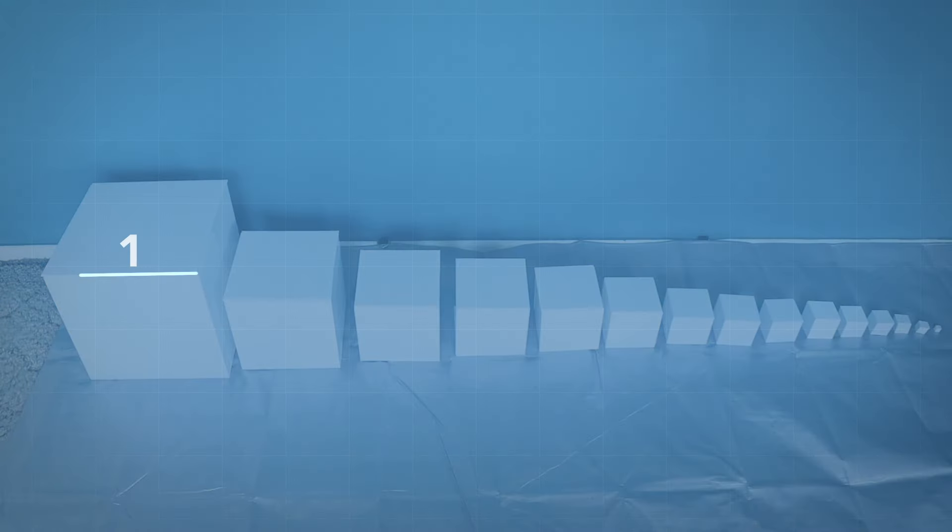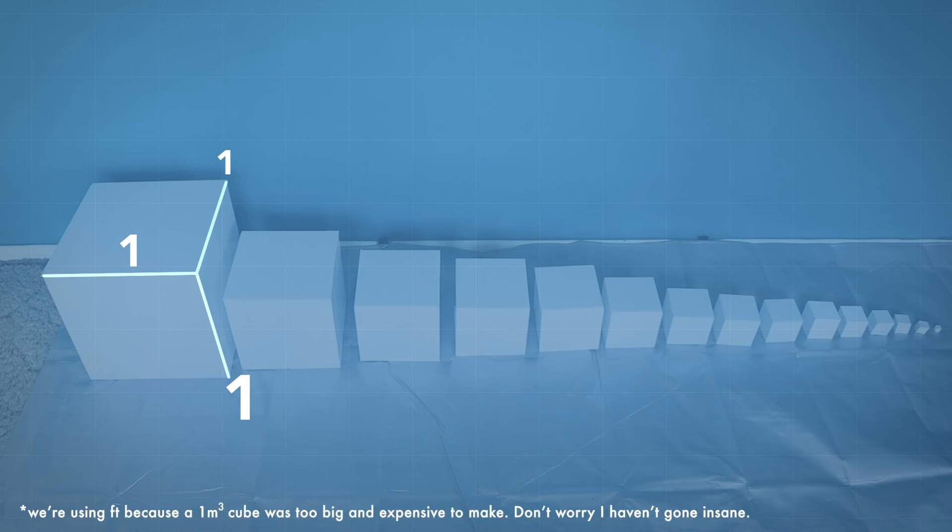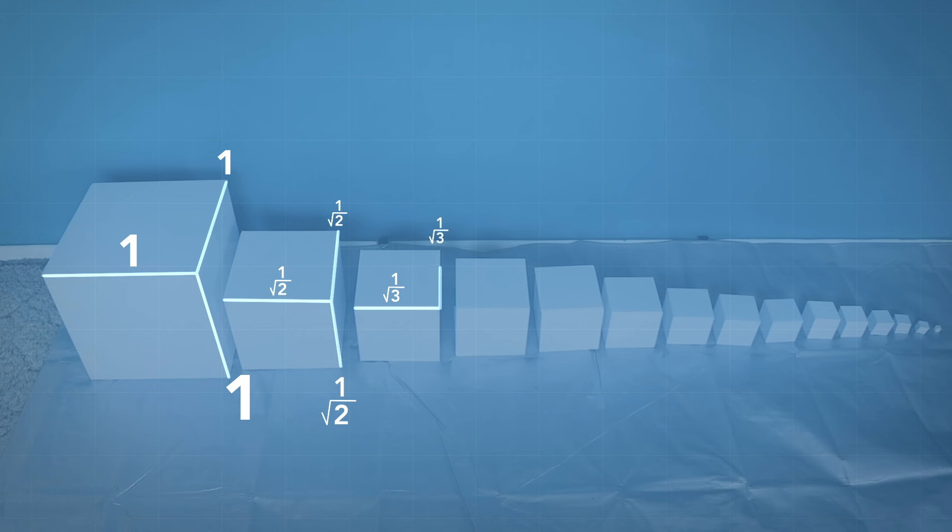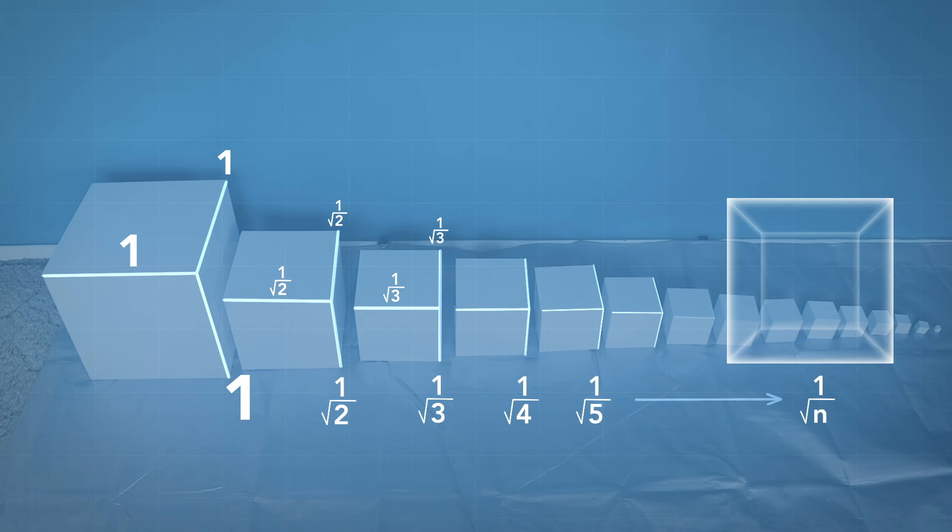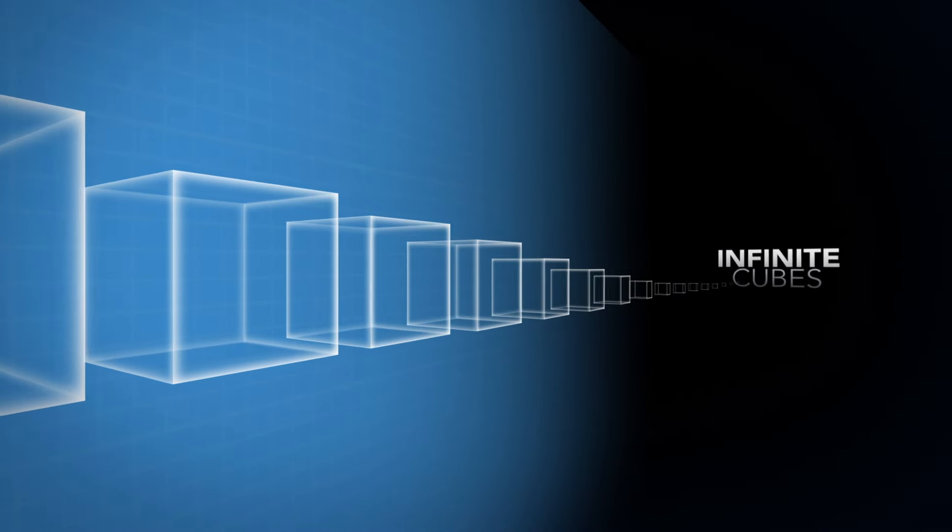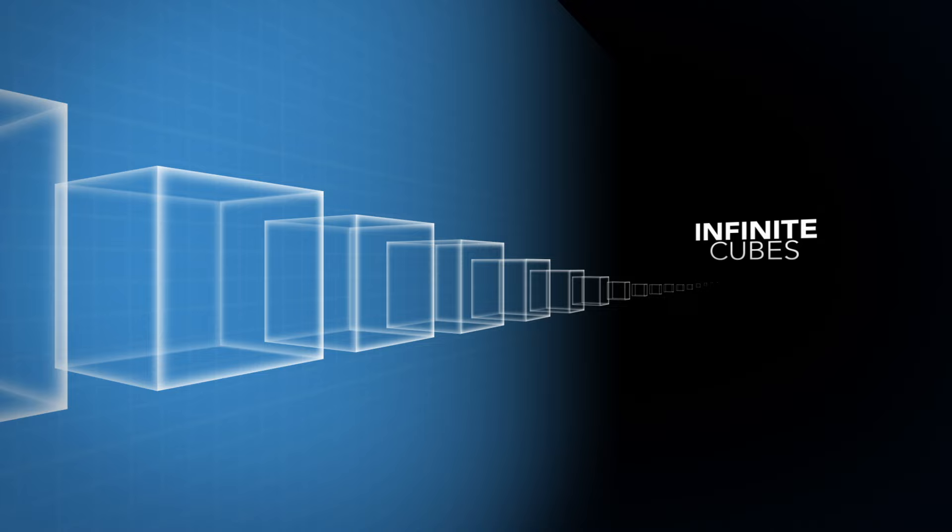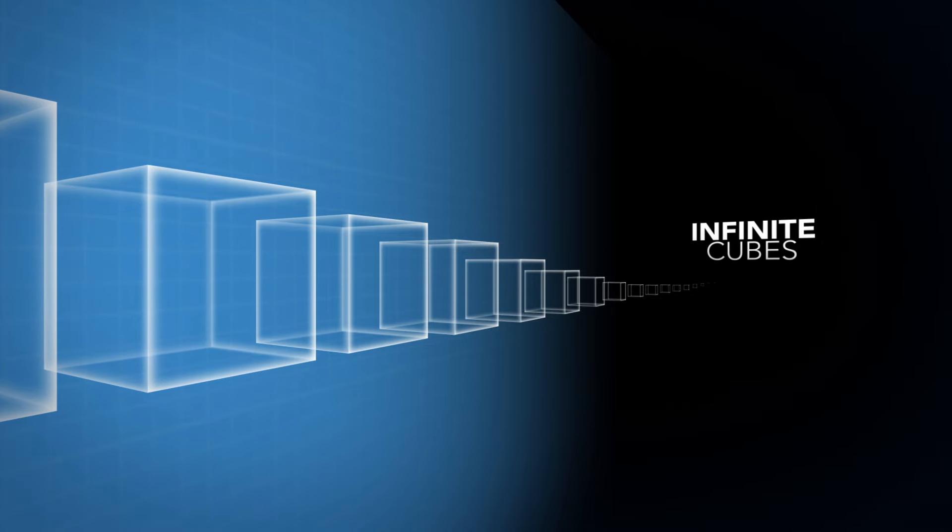The biggest measures 1 foot by 1 foot by 1 foot. The second biggest measures 1 over square root 2 feet by 1 over square root 2 feet by 1 over square root 2 feet. The third biggest measures 1 over square root 3 feet by 1 over square root 3 feet by 1 over square root 3 feet. This pattern continues with the nth biggest cube measuring 1 over square root n feet by 1 over square root n feet by 1 over square root n feet. Now imagine that you have an infinite number of cubes. This is the series of objects we'll be working with.